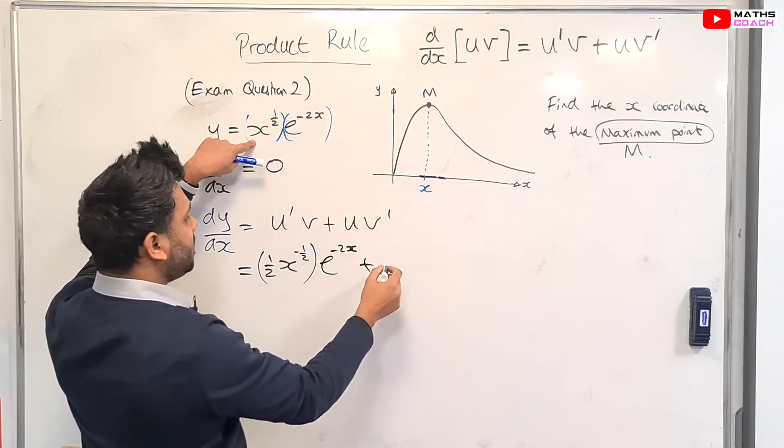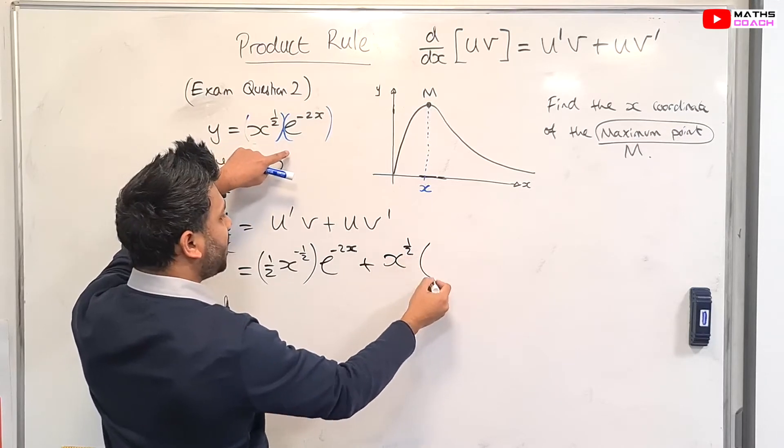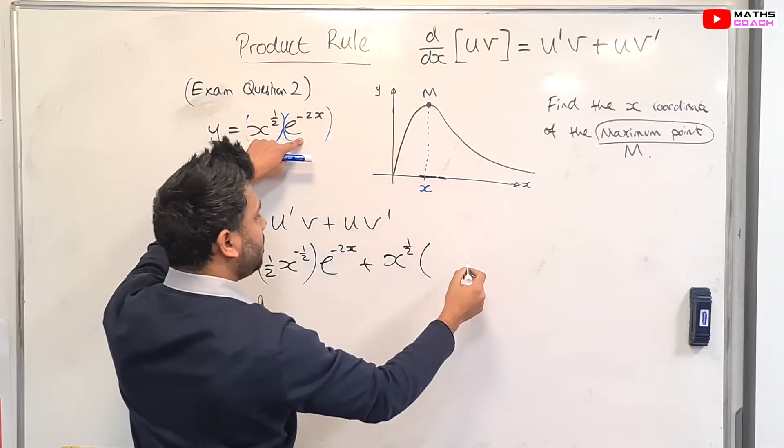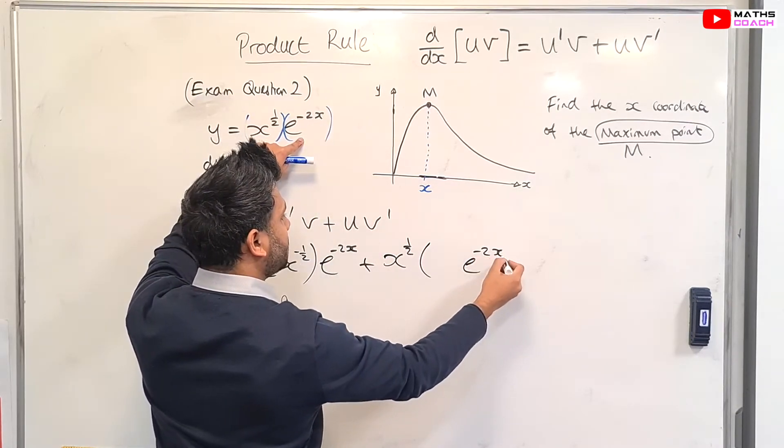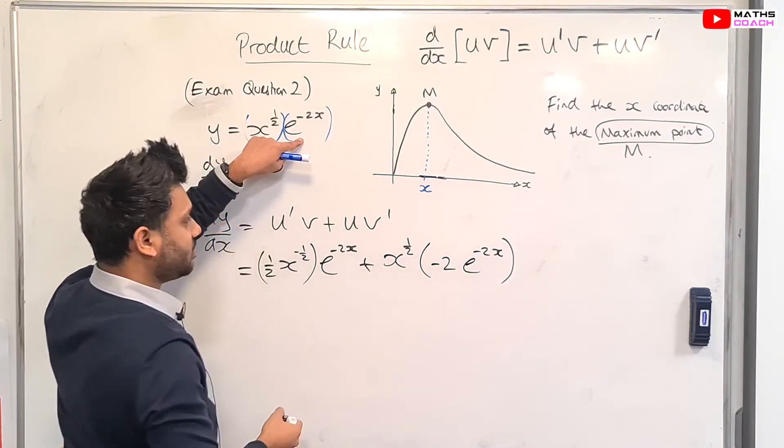Now, leave the u as it is, which is x to the power of a half. And then you multiply by v'. So if we differentiate this exponential, or differentiate the e, you get e to the power of minus 2x. And then the minus 2x differentiates into minus 2. That's the second part.